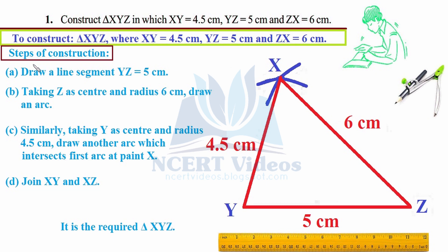Step A: Draw a line segment YZ equals 5 cm. You can take any of the line segments, but always try to take a whole number — we avoid 4.5 because it is easier to deal with whole numbers when measuring on a scale. Using your ruler, measure a distance of 5 cm and draw the line segment, naming it YZ.